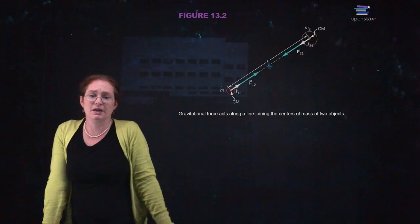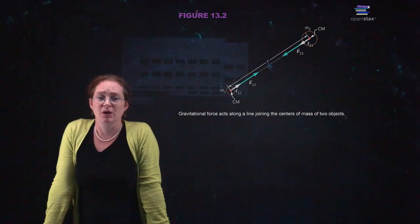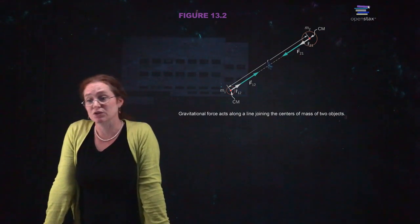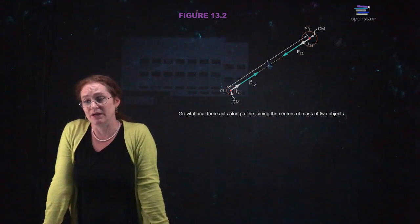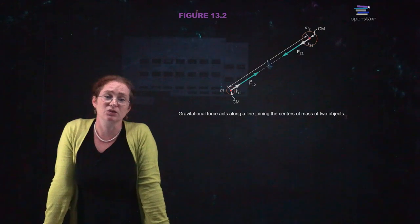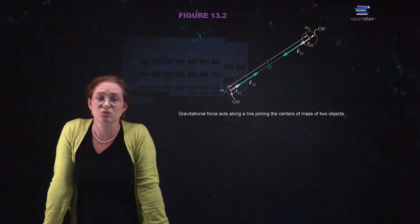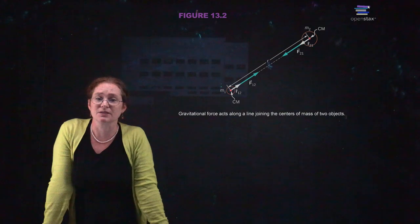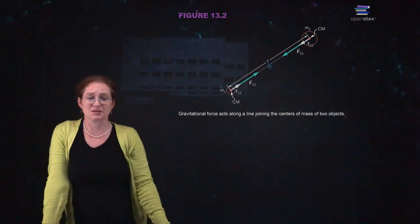This is how the gravitational force works: you draw a line between the centers of masses of the two objects, and gravity attracts the two objects along the line joining those centers of masses.